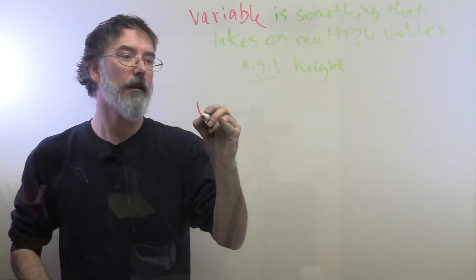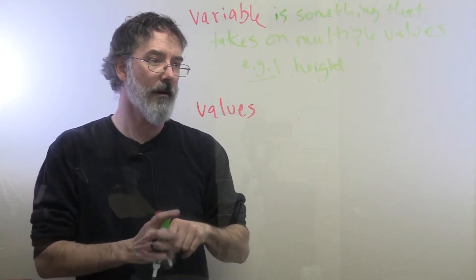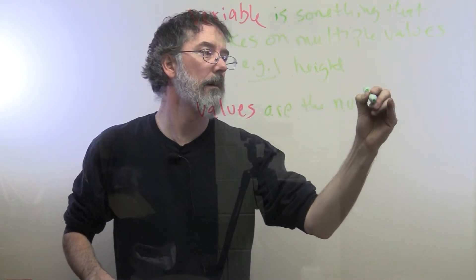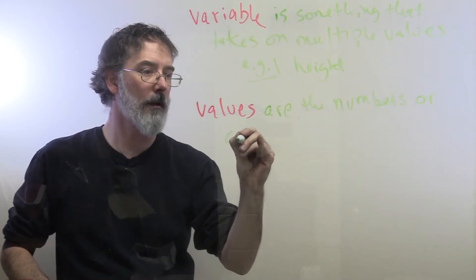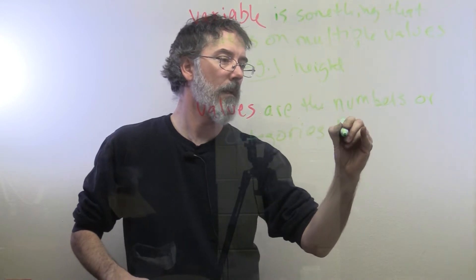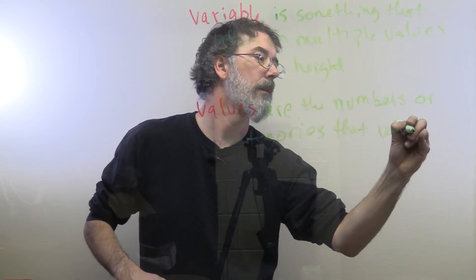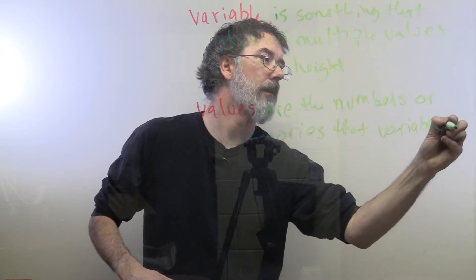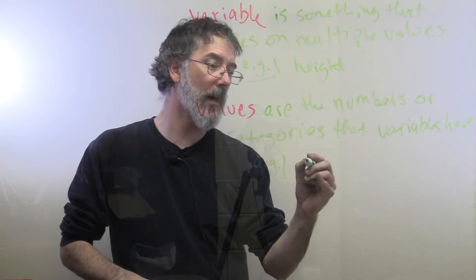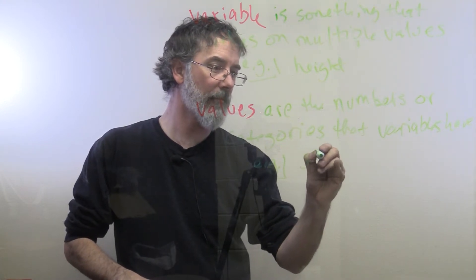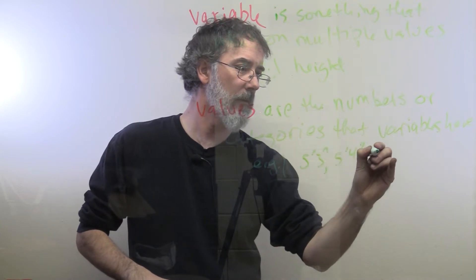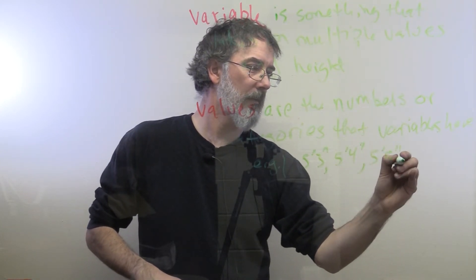Variables can take on different values. Values are the numbers or categories that variables have. For example, for human height, you could be 5'3", you could be 5'4", 5'5", etc.